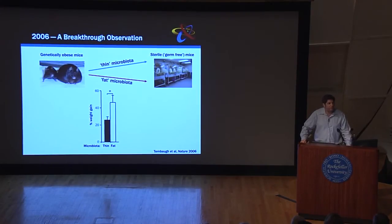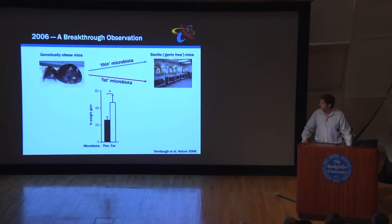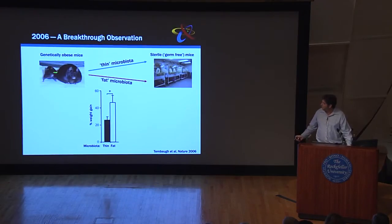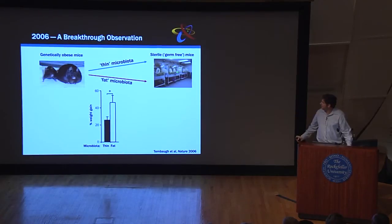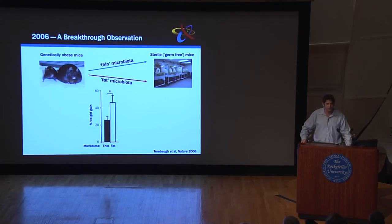He performed a very simple experiment that really shocked the world. He took mice that are genetically obese — this gene was actually discovered here at Rockefeller University — and he took regular lean mice. He extracted the gut microbiota from each of these mice and transferred them into specialized recipient mice called germ-free mice. These are mice housed in special isolators that are completely sterile — they have no gut microbes, no microbes on their skin.